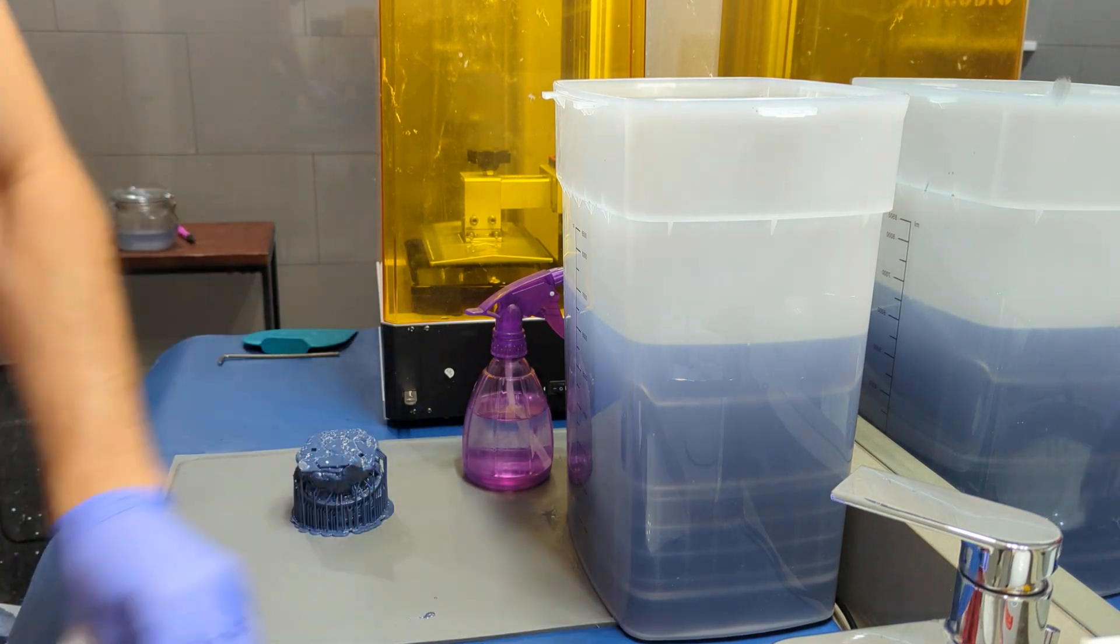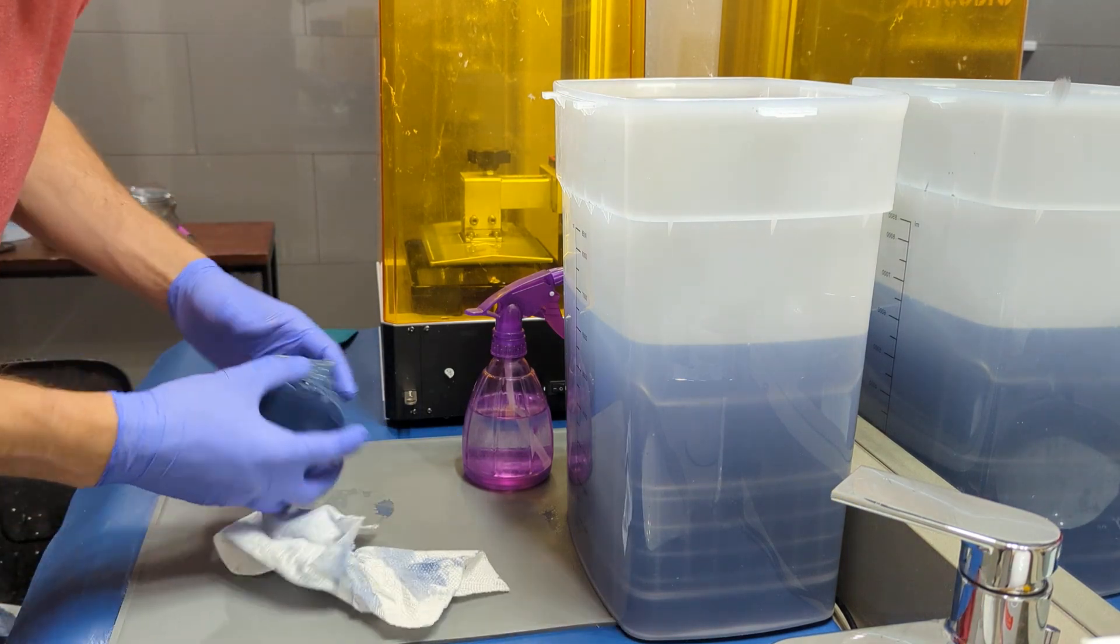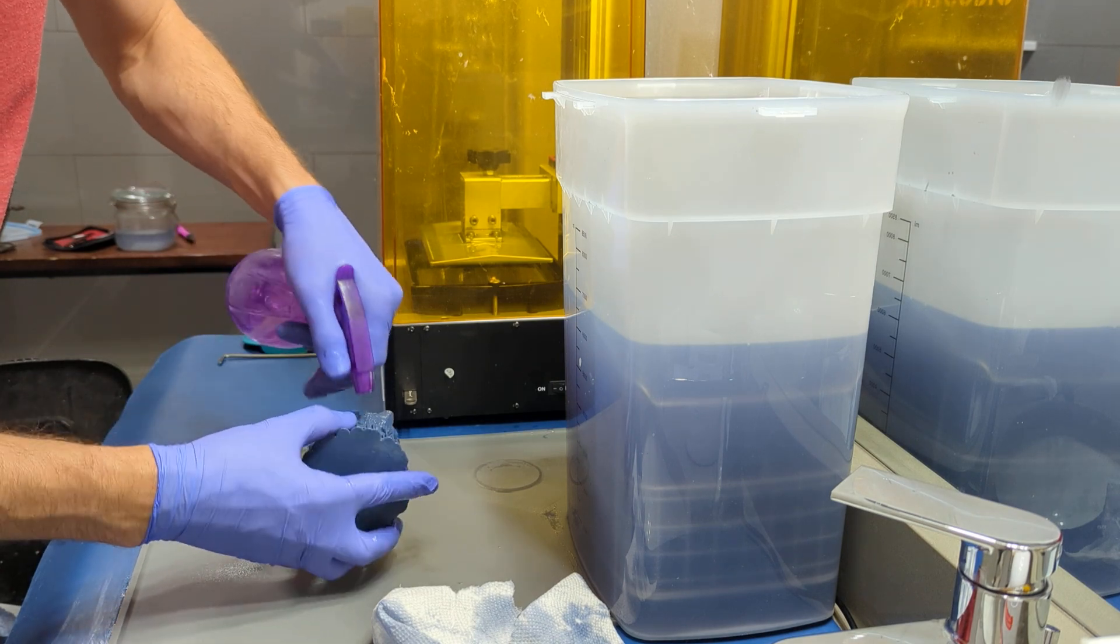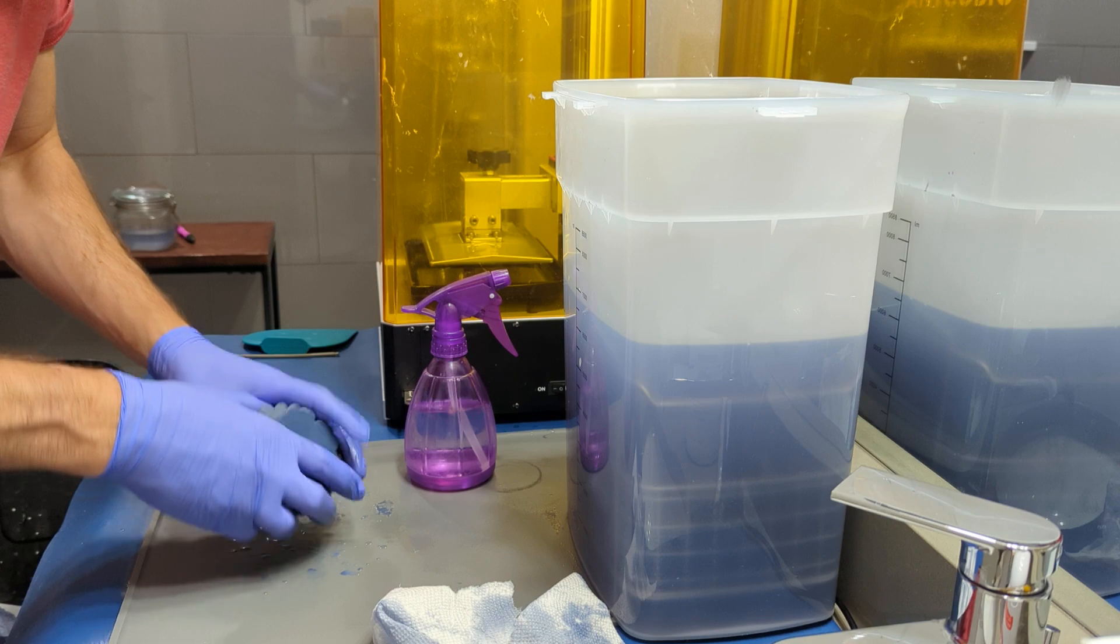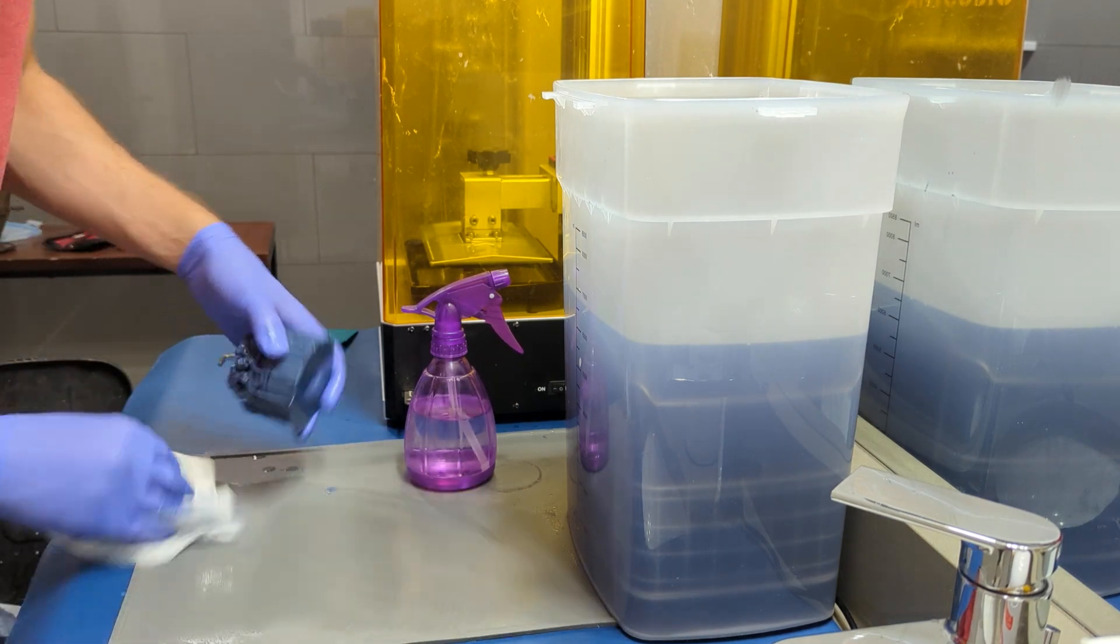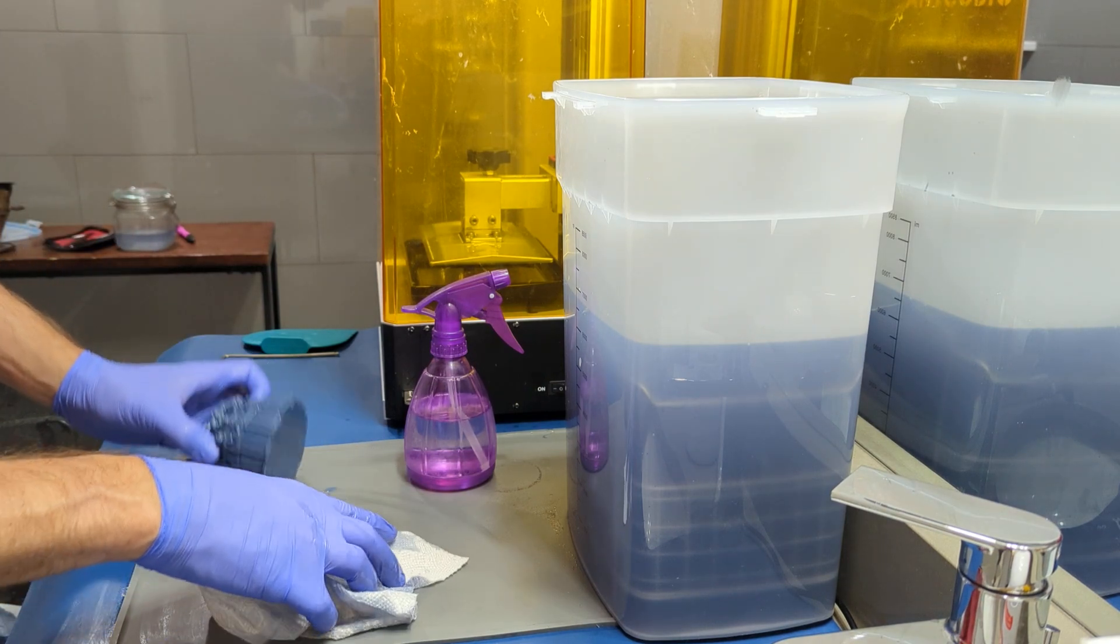These Wham Bam mats clean really easy. These other silicone don't at all. I highly recommend getting these ones. So this model being hollow is really leaking a lot of resin. I'm probably just going to have to end up dumping this one in there to get it off. But always try to get off as much as I can.